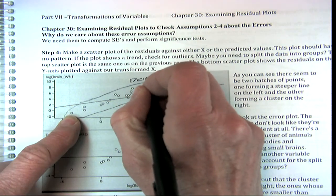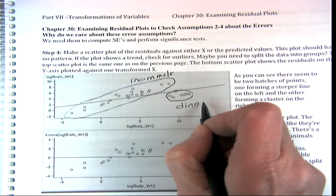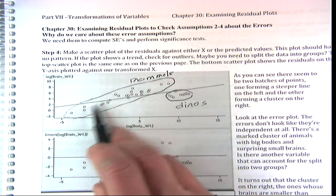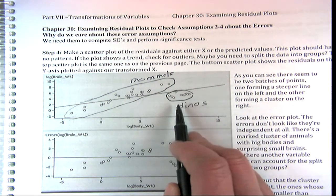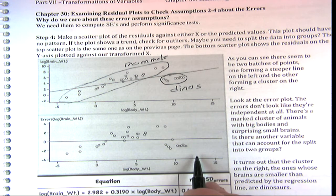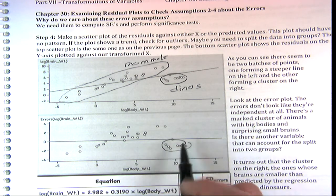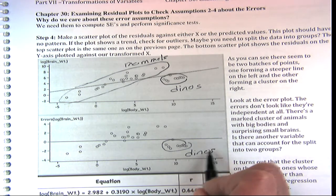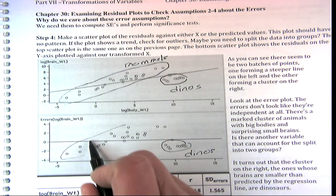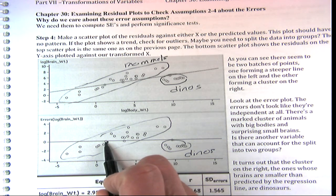This group turns out to be the mammals, and this group is the 10 dinosaurs — 34 animals altogether. The mammals would be fit much better with a steeper slope, but the dinosaur group is kind of bringing the slope down. When we look at the error plot, it's even more obvious — they don't look like they're independent at all. There's a marked cluster of animals: the dinos with big bodies and small brains.